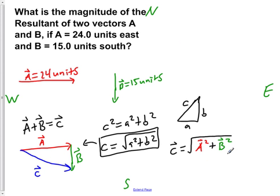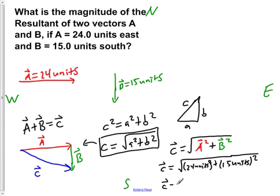Now if we plug in the values for A and B, we would have that C equals the square root of 24 units squared plus 15 units squared, which would give us 24 units squared is 576 units squared, and 15 units squared will give you 225 units squared.